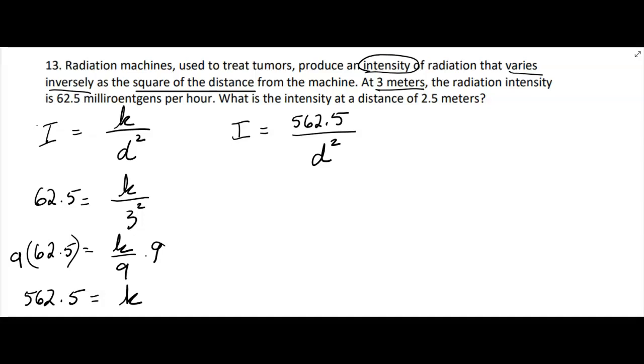So now your formula becomes I equals 562.5 over distance squared. Now they're either going to tell us the distance and we figure out the intensity or they're going to tell us the intensity and we have to figure out the distance. What is the intensity at a distance of 2.5 meters? Okay, so they tell us the distance and it's 2.5.